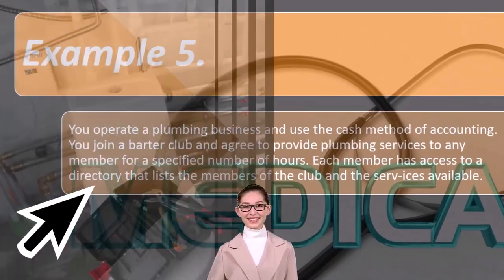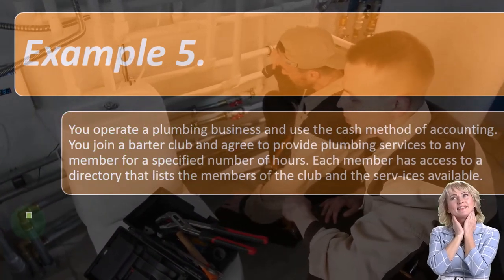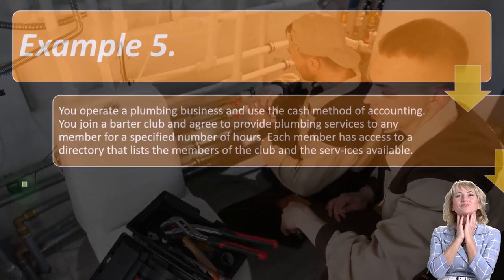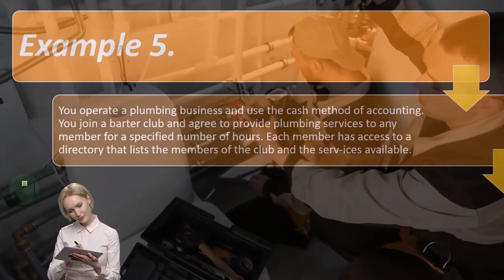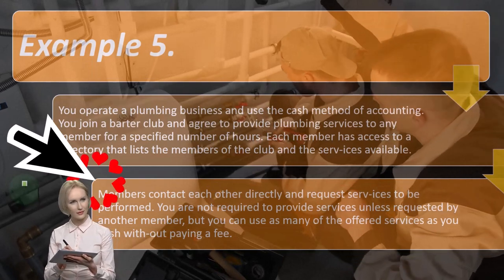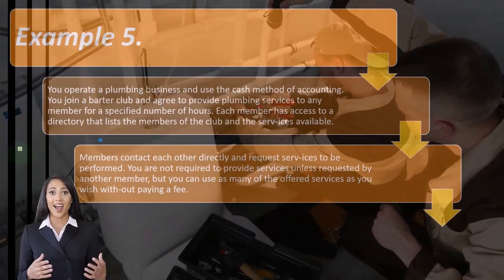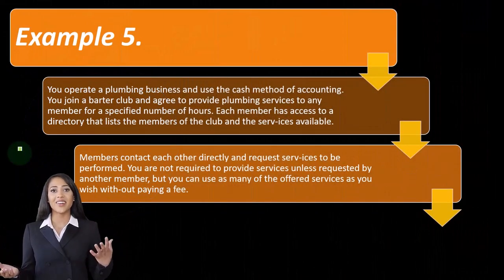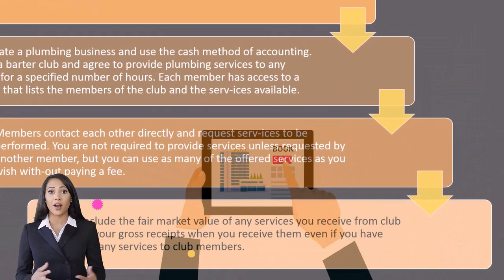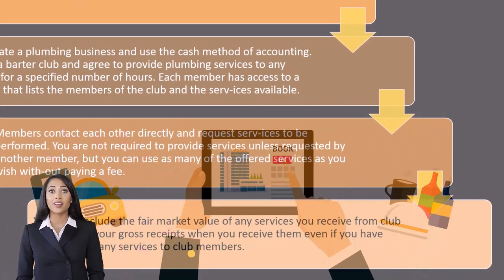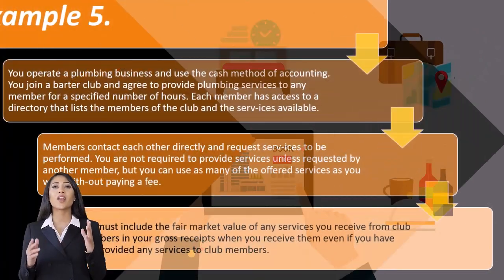Example five: you operate a plumbing business and use the cash method of accounting. You join a barter club and agree to provide plumbing services to any member for a specified number of hours. Each member has access to a directory listing members and available services. Members contact each other directly and request services. You are not required to provide services unless requested, but you can use as many of the offered services as you wish without paying a fee. You must include the fair value of any services you receive from club members in your gross receipts when you receive them, even if you have not yet provided any services to club members.